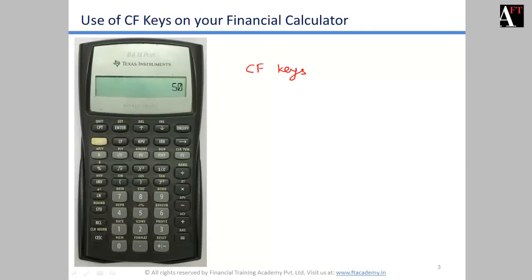Press Enter to take the 50 into the calculation, then press the down arrow key. This brings you to F01, which asks for the frequency of cash flow one. By default it will be one, so if cash flow 50 is occurring multiple times — say twice or thrice — you can enter 2 or 3 accordingly. In our case it occurs only once, so leave it and press the down arrow key to C02, enter 100, press Enter, down arrow key again for F02, then down arrow key once more to enter 150 and press Enter.